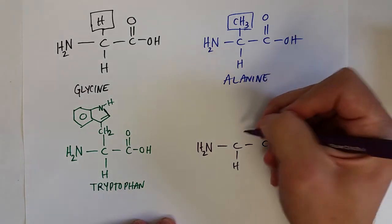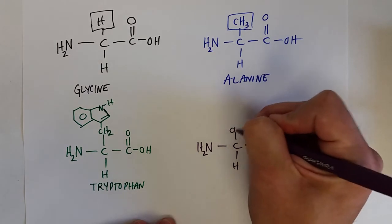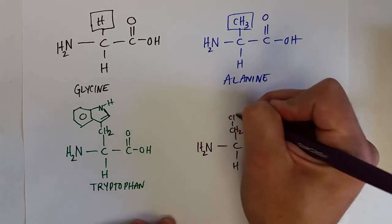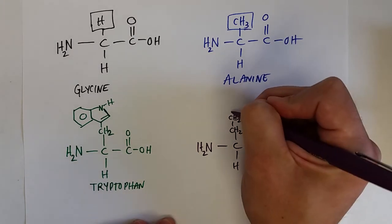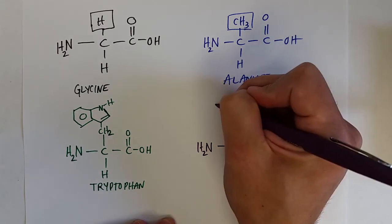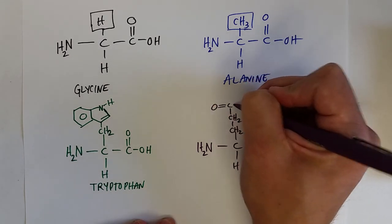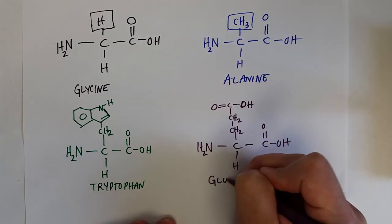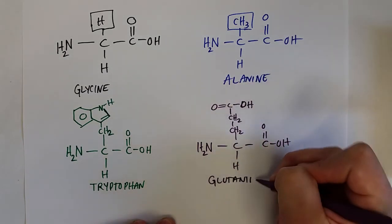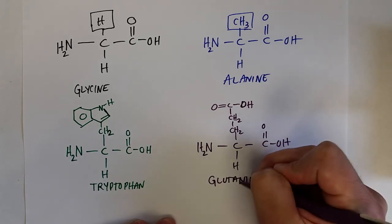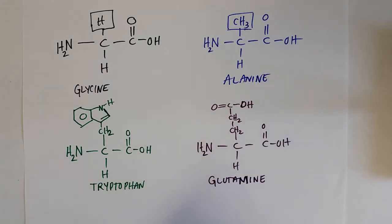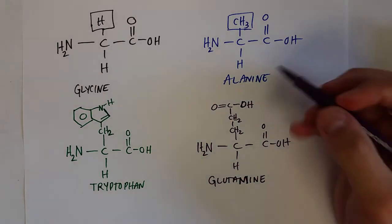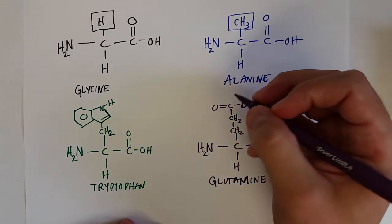And then here is what glutamine's R group is. It actually has a carboxylic acid side chain. So that is the R group for glutamine.